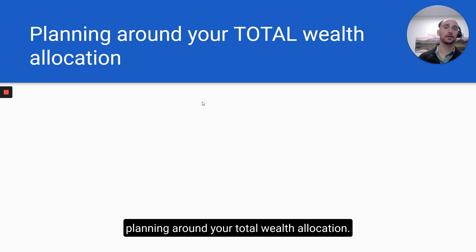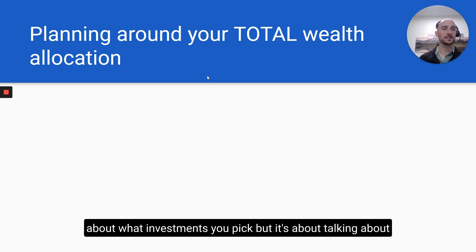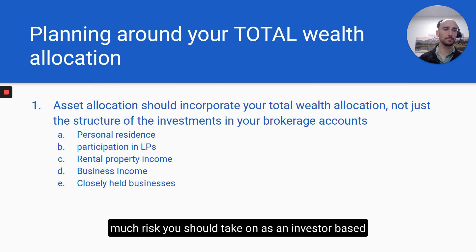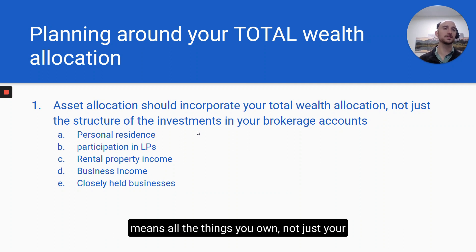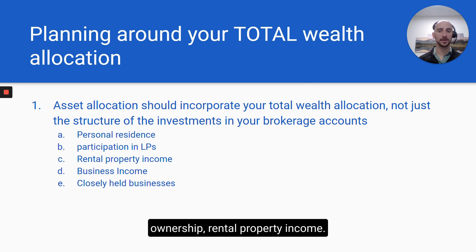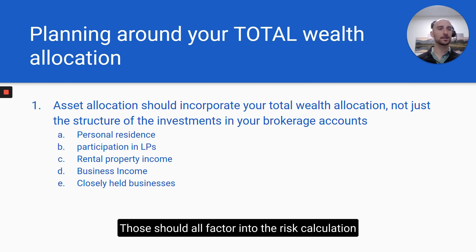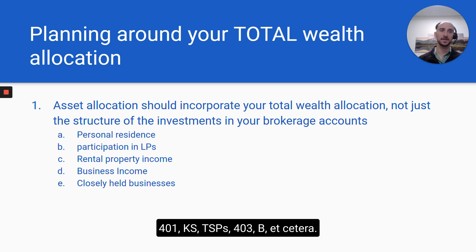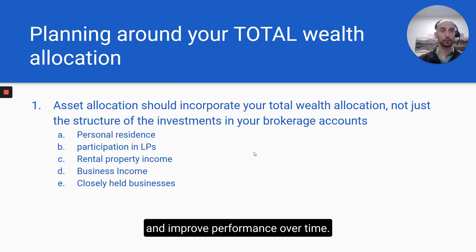Now we talk about planning around your total wealth allocation. This moves to the investing arena — not about which investments you pick, but about what you consider when deciding how much risk to take on as an investor. This is based not just on your age, but on your total wealth allocation: all the things you own — not just your brokerage account, but also your personal residence, business income, closely held business ownership, rental property. Those should all factor into the risk calculation that determines how your retirement assets in brokerage accounts, IRAs, 401ks, TSPs, and 403bs are allocated. That planning can help reduce risk and improve performance over time.